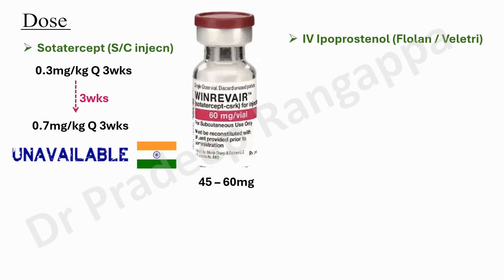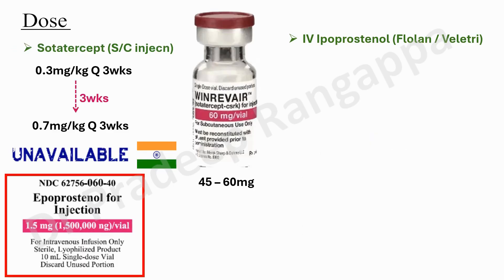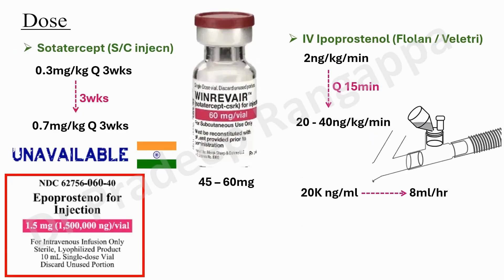Epoprostenol, available as Flolan or Veletri, is not approved by DCGI but is available in the grey market. The dosage starts at 2 ng per kg per minute as an IV infusion, titrating every 15 minutes to reach the target dose of 20 to 40 ng per kg per minute. For inhaled prostacyclin using a vibrating mesh nebulizer, dilute to 20,000 ng per ml and run at 8 ml per hour, which delivers prostacyclin at 10 to 50 ng per kg per minute.